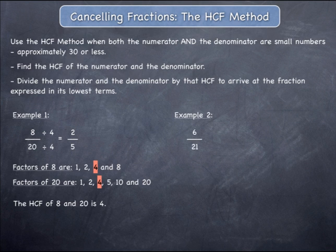Example 2: 6 over 21. Start by writing a list of the factors of 6 and 21. The factors of 6 are the numbers that will divide into 6 with a remainder of 0. They include 1, 2, 3 and 6.